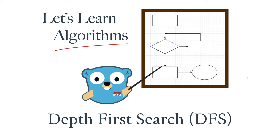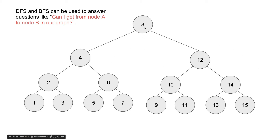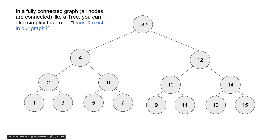In general, a DFS and a BFS, which are short for depth first search and breadth first search, can be used to answer questions like: can I get from node A to node B in our graph? So if you're looking at this graph, you might ask: can I get from the 8 to the 7?